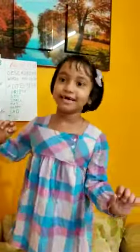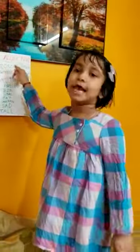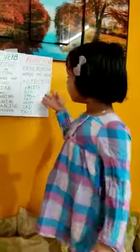And now I will tell you about adjective. Describing words are called adjective. Adjectives describe about noun, like beautiful. So, mother.